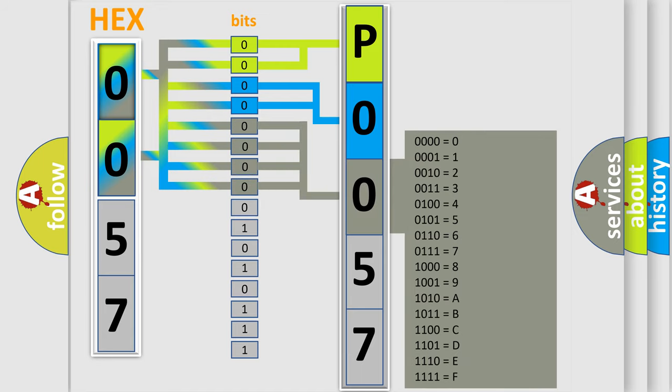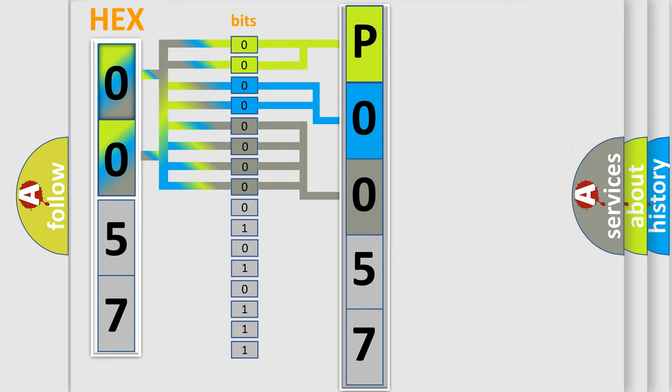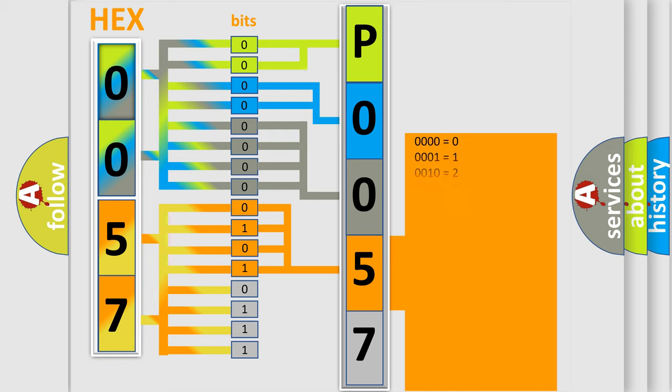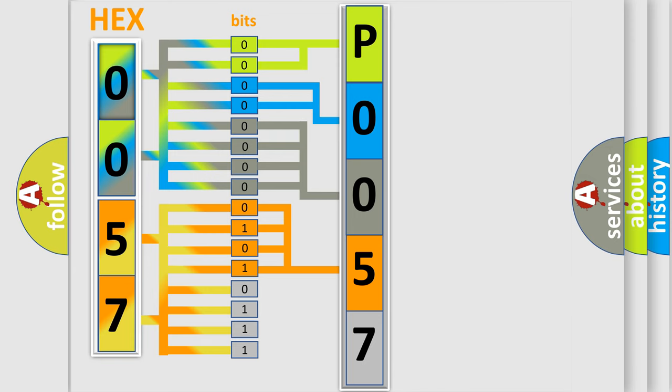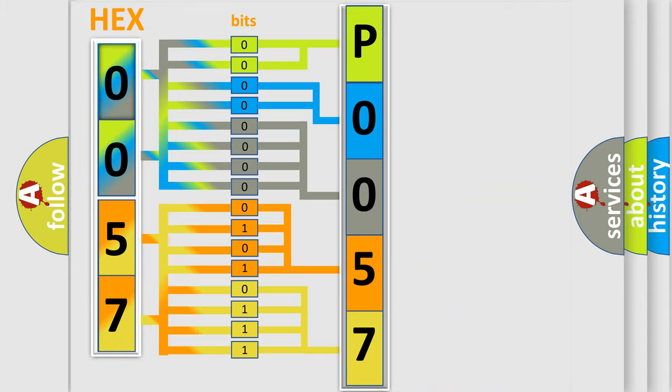The second byte is composed of a combination of eight bits. The first four bits determine the fourth character of the code, and the combination of the last four bits defines the fifth character. A single byte conceals 256 possible combinations. We now know in what way the diagnostic tool translates the received information into a more comprehensible format.